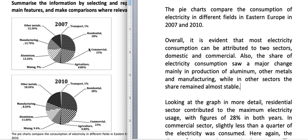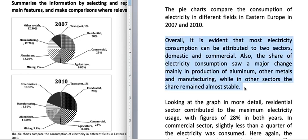Also, the share of electricity consumption saw a major change mainly in the production of aluminium — from 13.2 to 11 percent — other metals, and manufacturing, while in other sectors the share remained almost stable. In aluminium there was a change from 13.2 to 11, manufacturing from 12.7 to 8.5, and other metals from 12.3 to 18. This overview is very good because it tells where the maximum electricity consumption is seen and what changes occurred over the given three years.